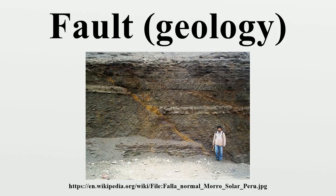The two sides of a non-vertical fault are known as the hanging wall and foot wall. By definition, the hanging wall occurs above the fault plane and the foot wall occurs below the fault. This terminology comes from mining: when working a tabular ore body, the miner stood with the foot wall under his feet and with the hanging wall hanging above him.